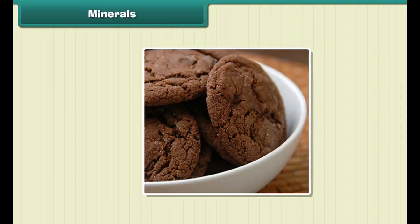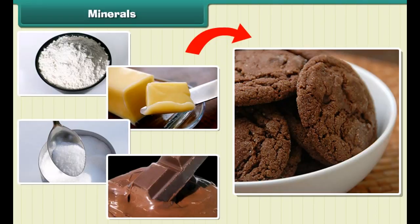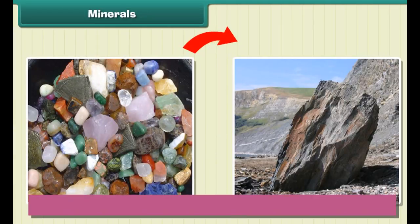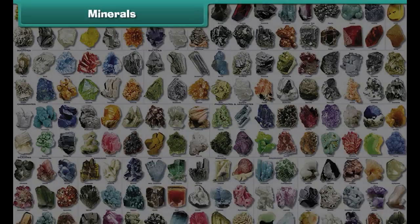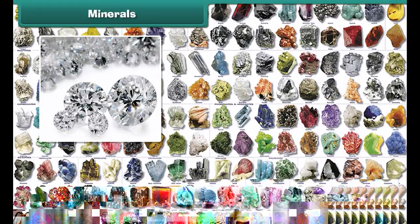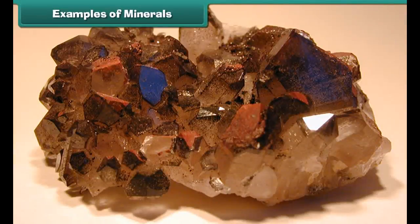Minerals. We have learnt about rocks. Rocks are made of minerals. Think of a chocolate cookie as a rock. The cookie is made of flour, butter, sugar, and chocolate. The cookie is like a rock and the flour, butter, sugar, and chocolate are like minerals. Thus, minerals are naturally occurring pure substances from which rocks are formed.